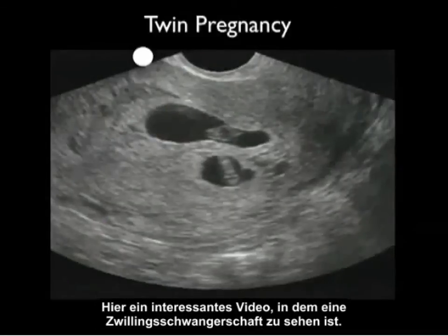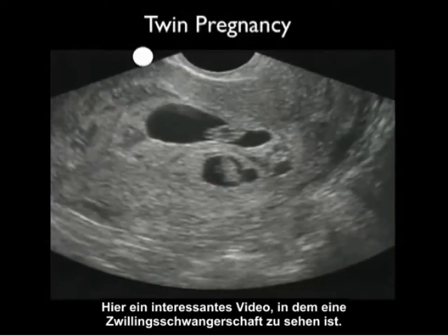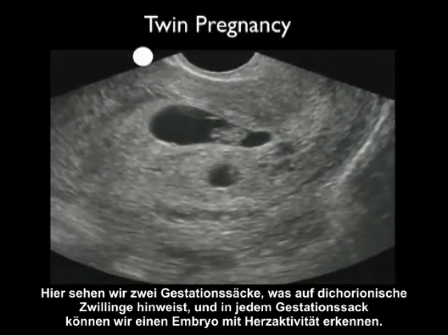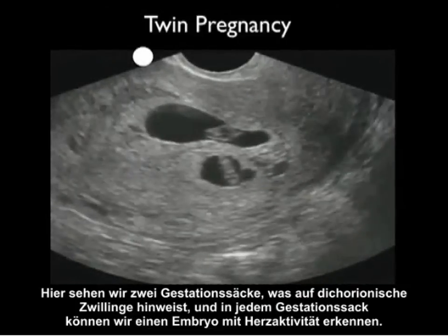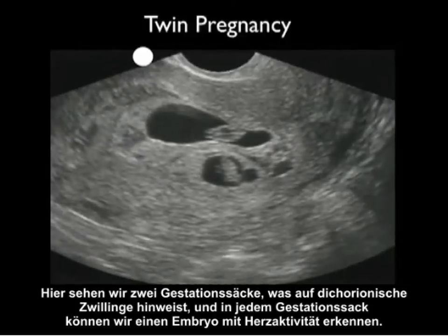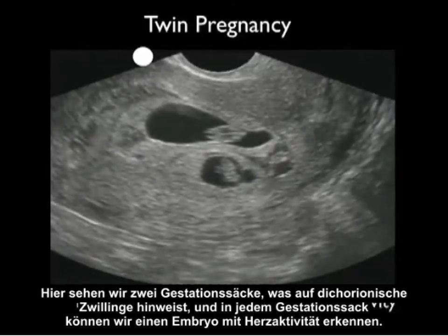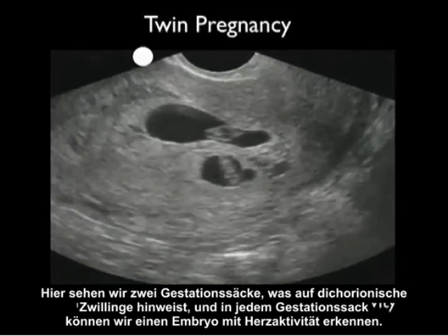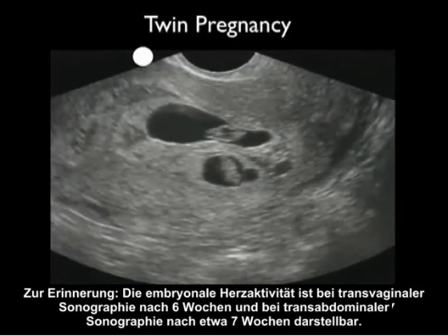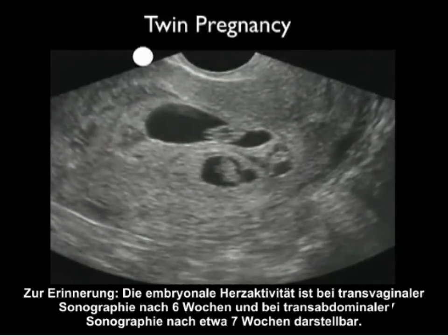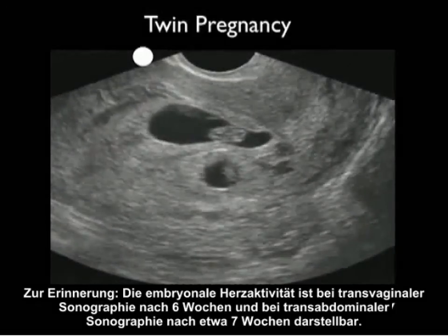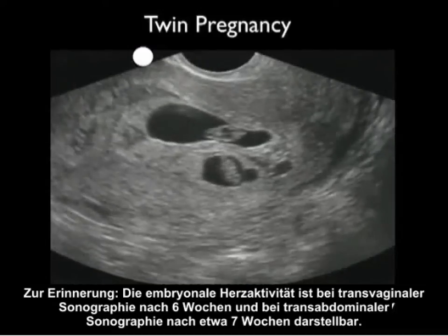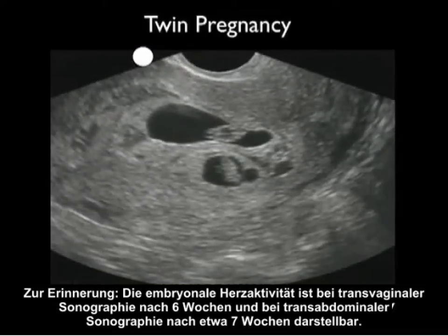Here's an interesting video clip showing a twin pregnancy — two gestational sacs signifying dichorionic twins. Within each gestational sac we can see little fetal poles with a flicker of heartbeats. Fetal heart activity is seen at about six weeks on transvaginal sonography and about seven weeks on transabdominal sonography.